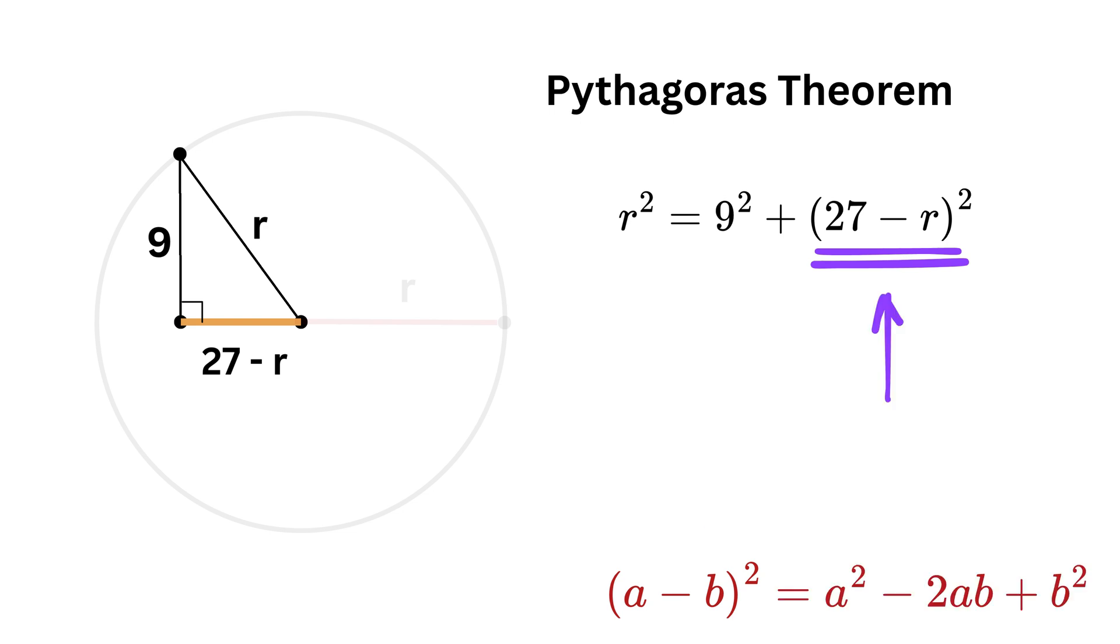So we will expand this term. We get r squared equals 9 squared plus 27 squared minus 2 times 27 times r plus r squared. So r squared equals 9 squared is 81, then 27 squared is 729.